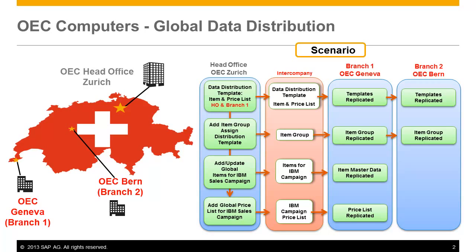With the new release of Intercompany Integration Solution 2.0 for SAP Business One 9.0, users are now enabled to create predefined data distribution templates, which makes sharing and replicating relevant data across different company branches simple. A data distribution template defines the custom recipient list for master data replication in SAP Business One companies within an intercompany landscape.